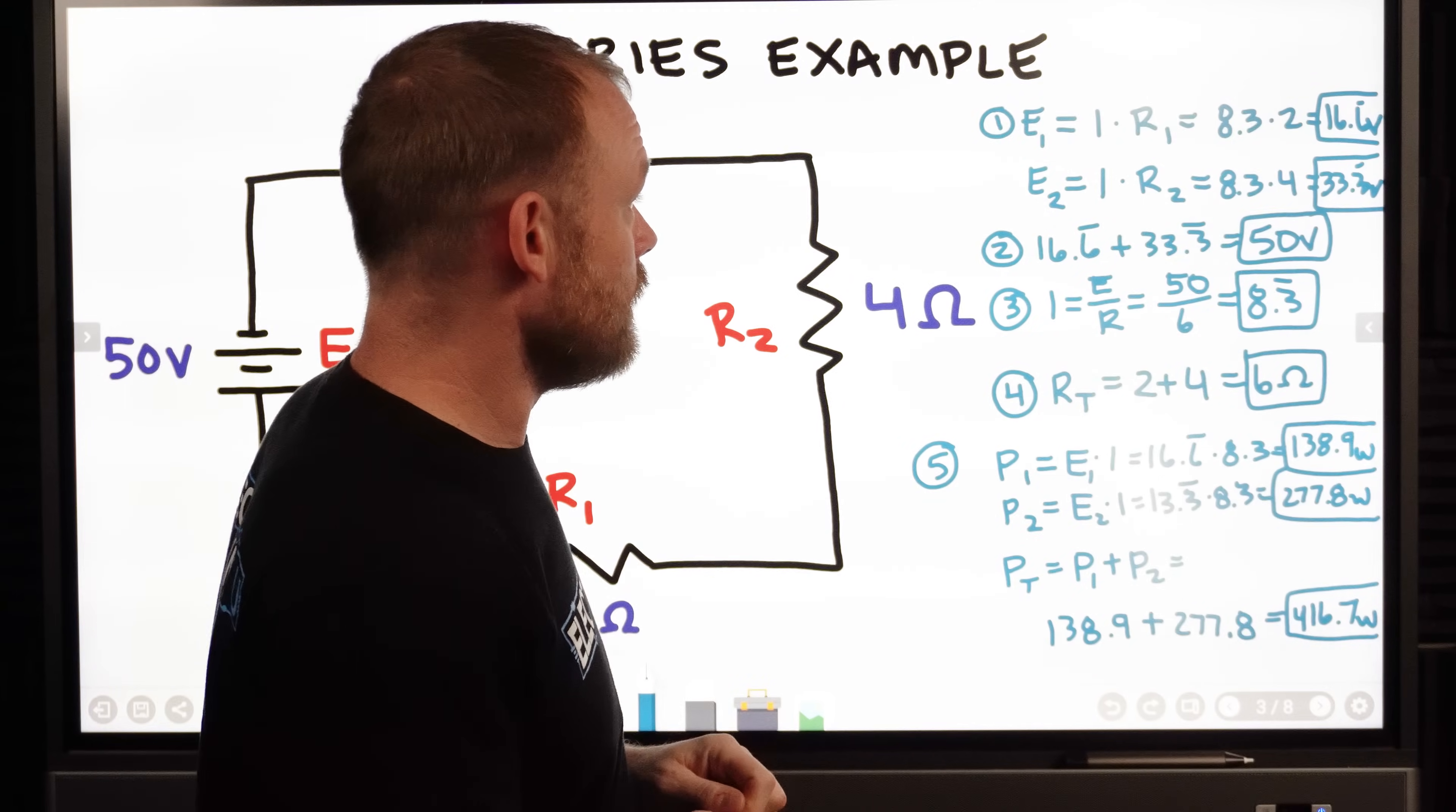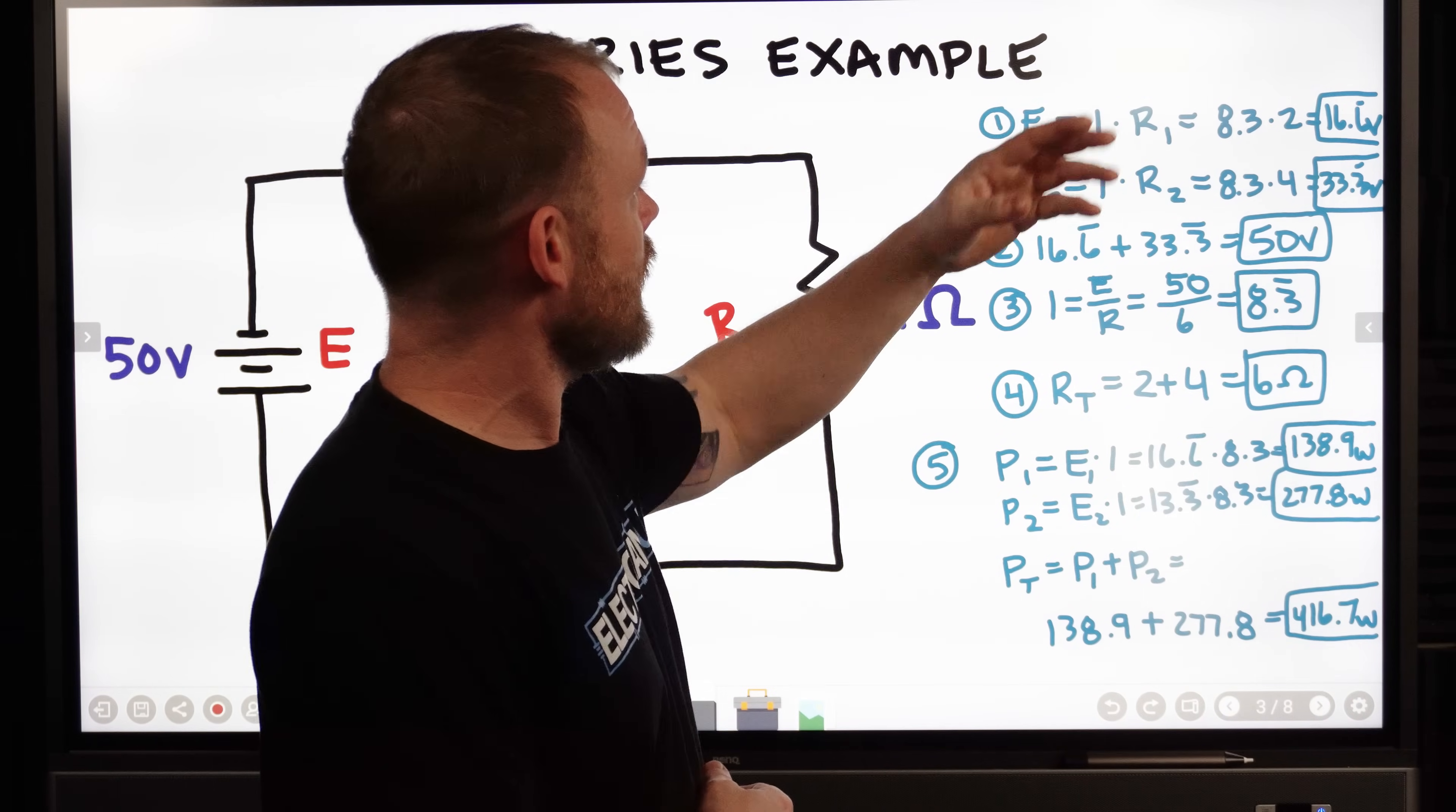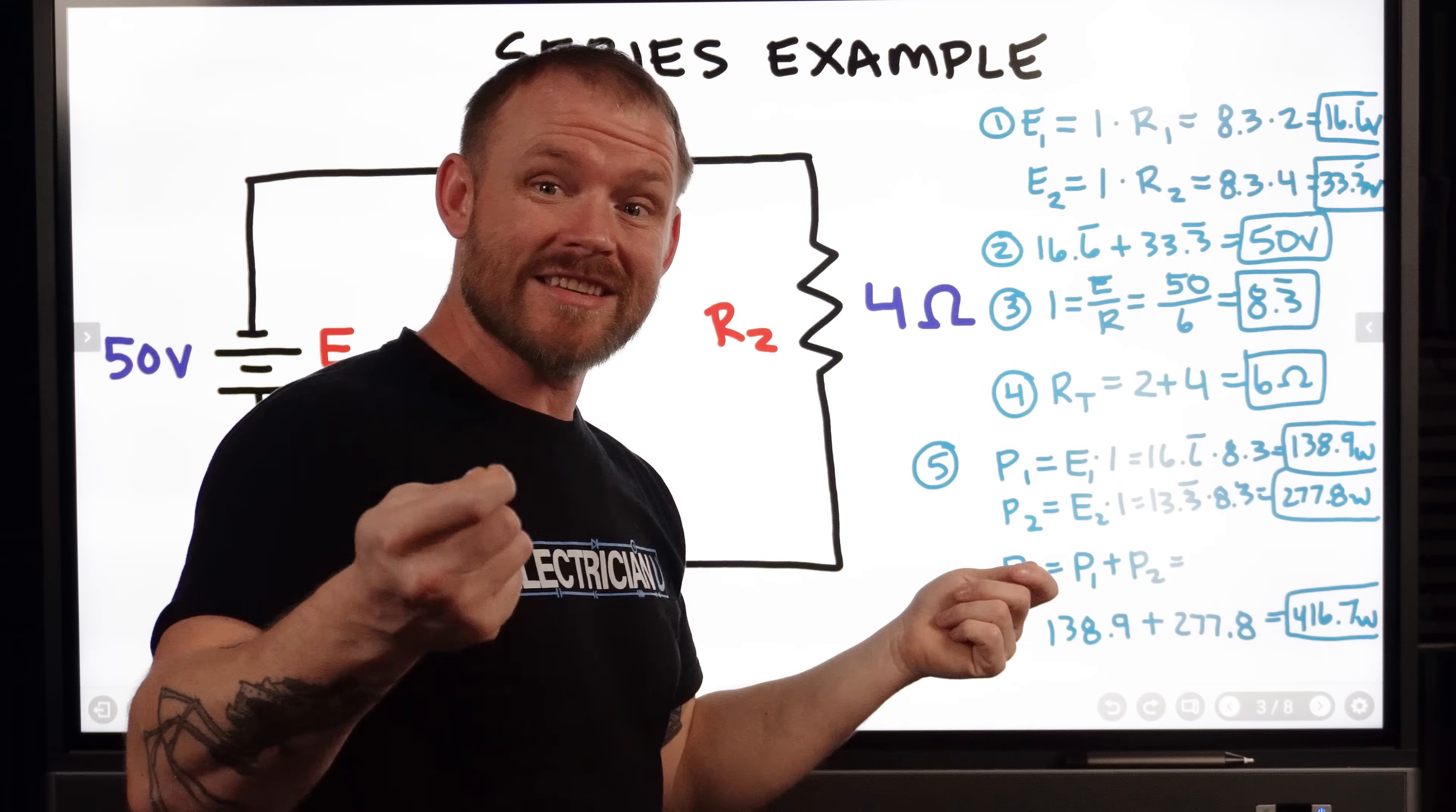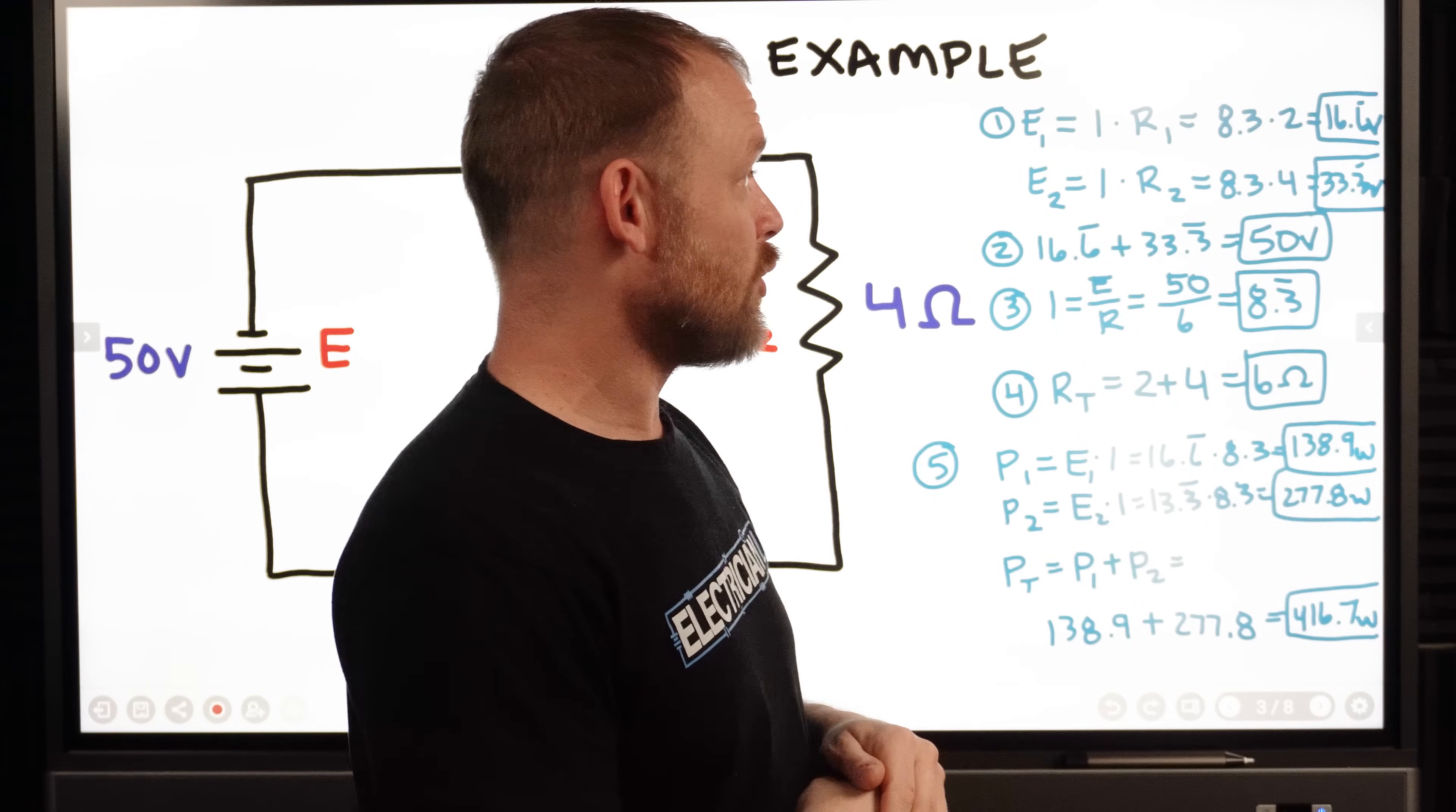So we take E1, E equals I times R. We're using just general Ohm's law here. So voltage is 50 volts, the amperage is 8.3, and resistance one, R1, says 2 ohms. So if we take 8.3, our amperage, times 2, which is 2 ohms, we should get 16.6 volts. We will actually experience a 16.6 volt drop once we connect our source across that resistance. So we're going to hang on to that voltage, 16.6 repeating.